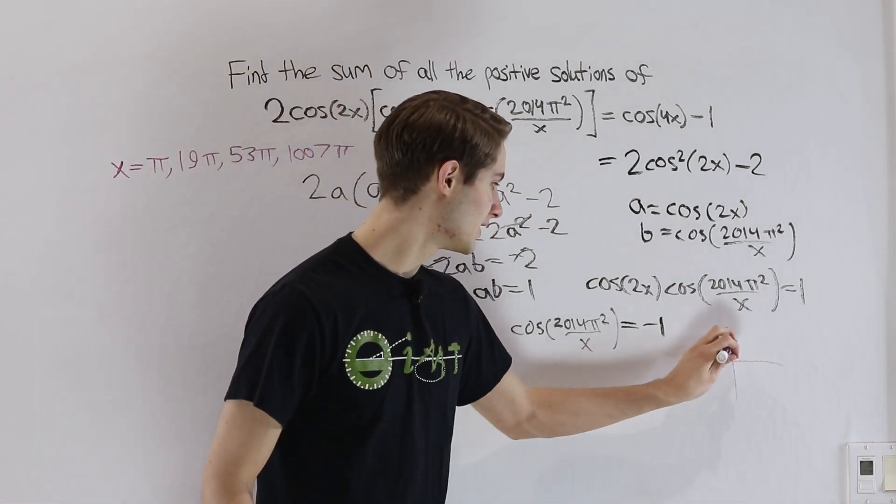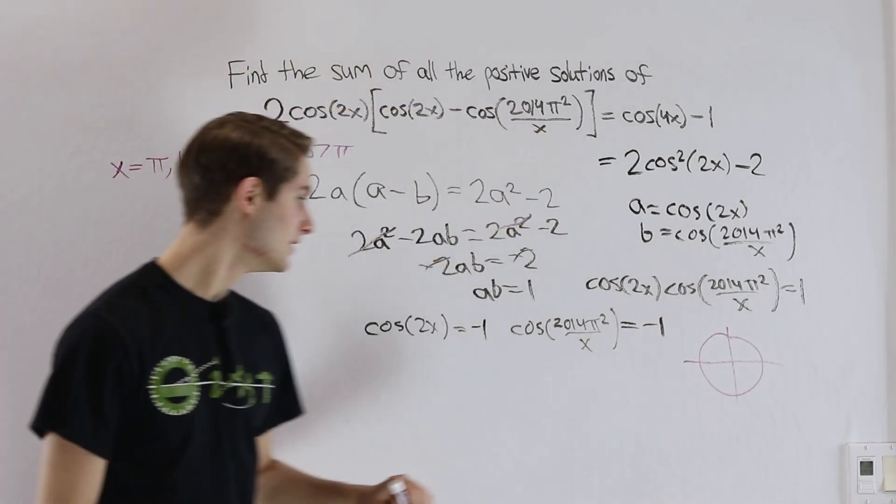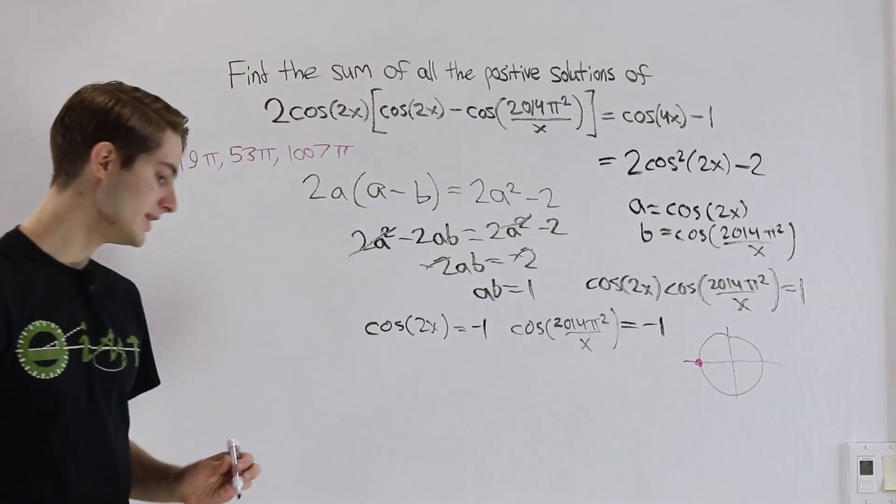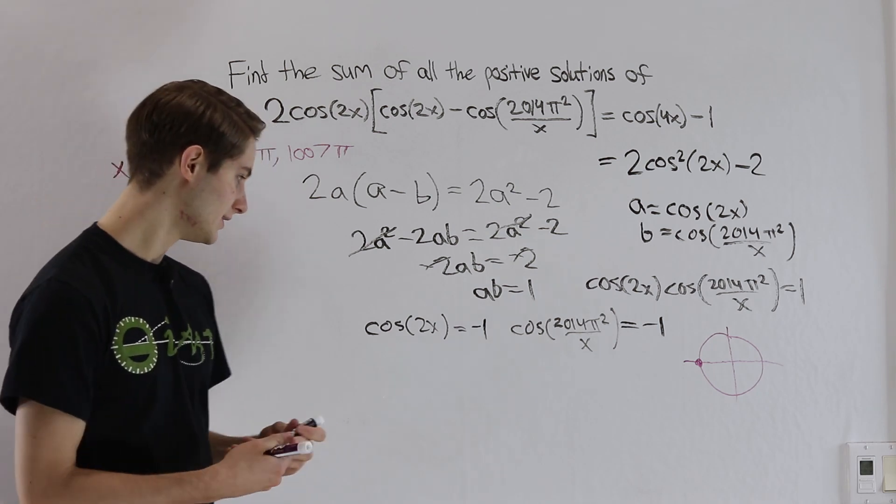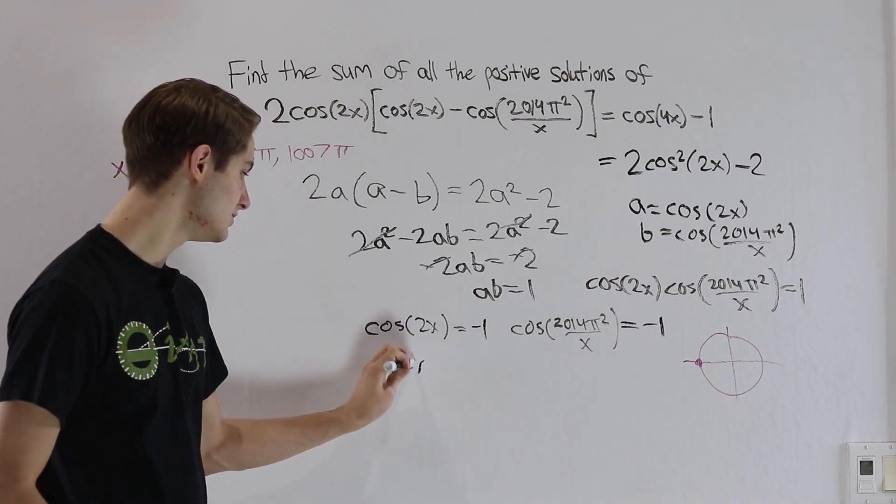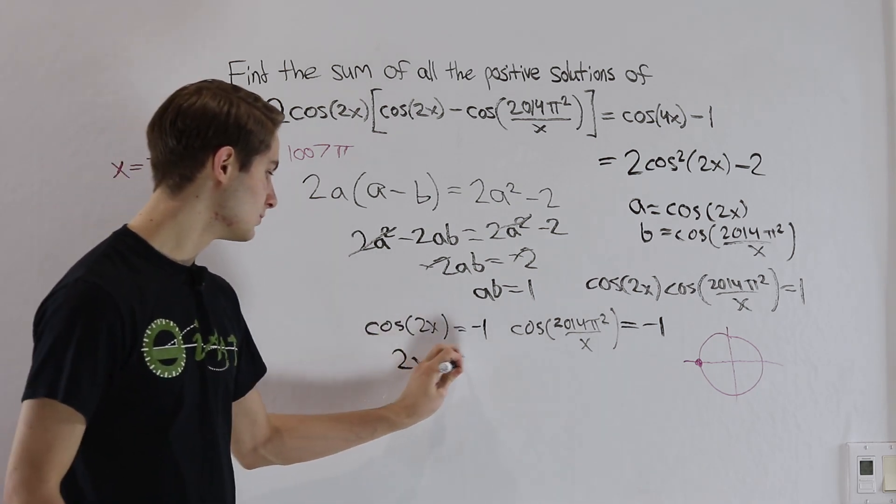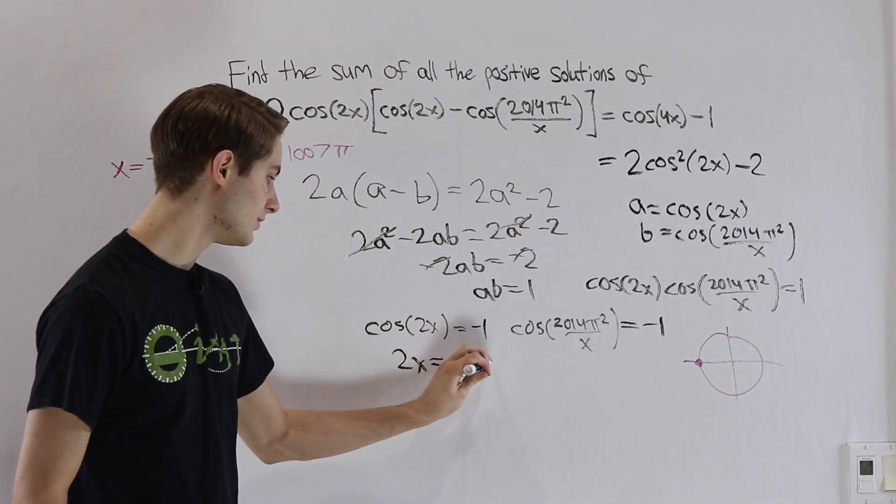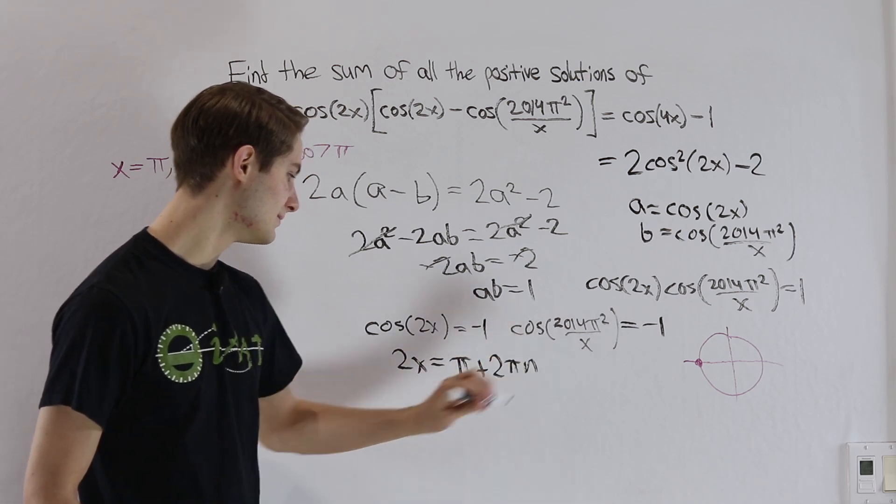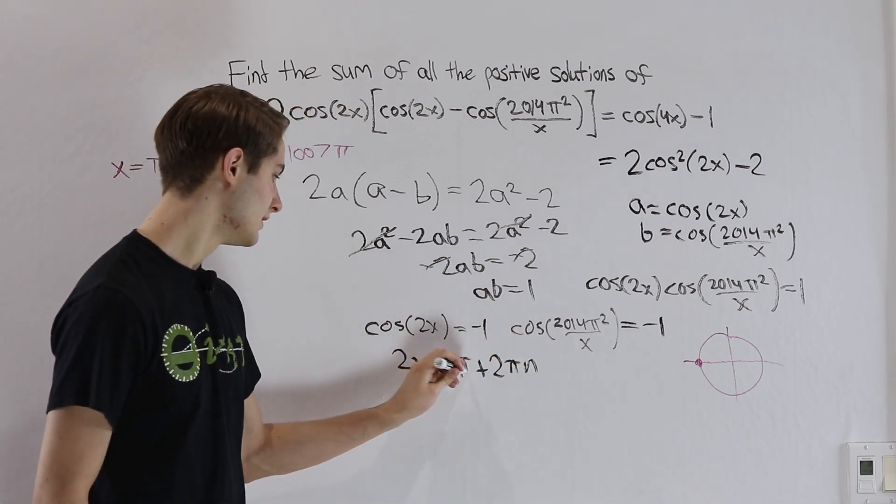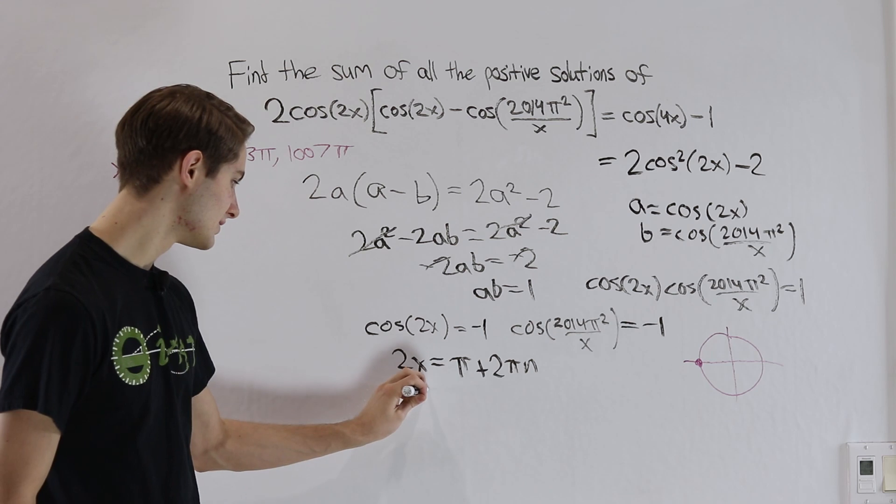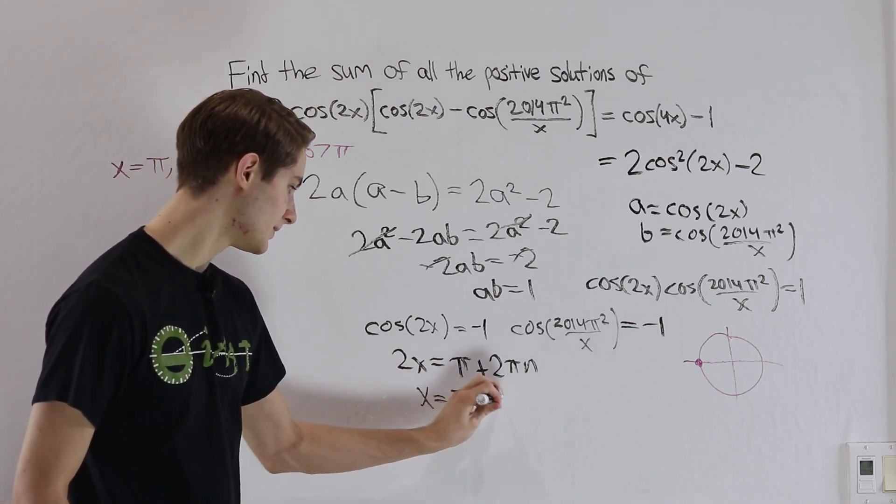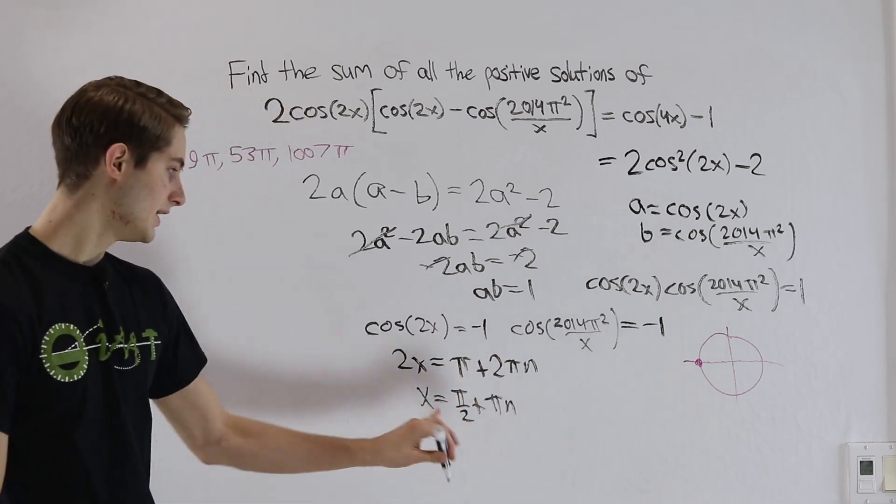Once again, it's going to help to start out just by drawing a unit circle. Cosine is the x value. If we want the x value to be negative 1, that's going to show up right there, which means that our input, in this case for the first function is 2x, that's going to have to equal π, because π radians around is going to get us to here. And then we can always add 2π times some integer n. If we want to solve for x, we know x is equal to π over 2 plus π times n. And once again, we can go and plug this in to our second function here.